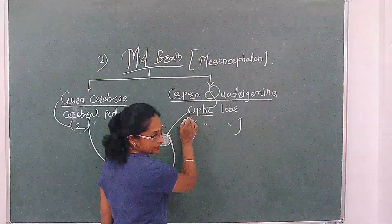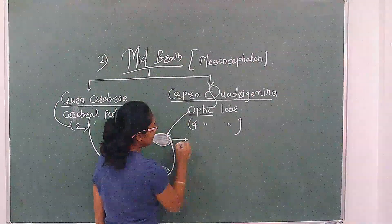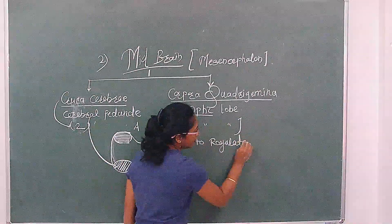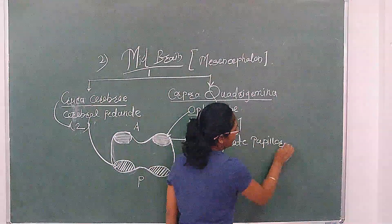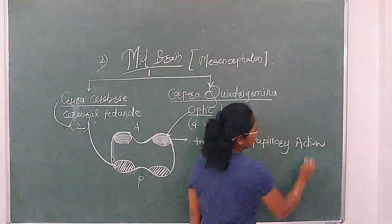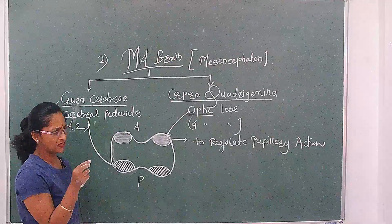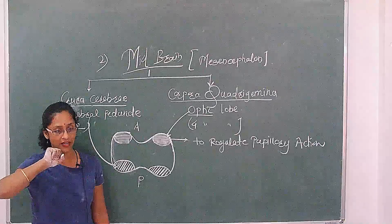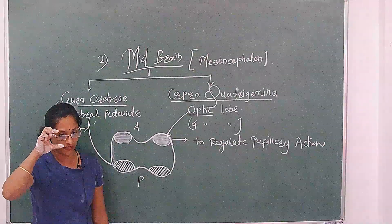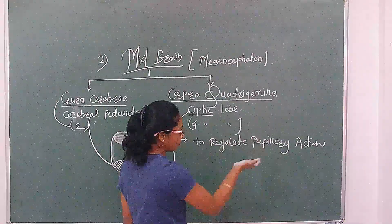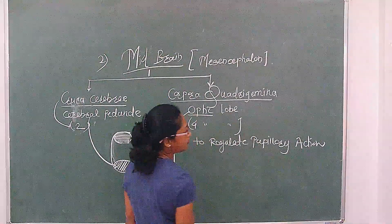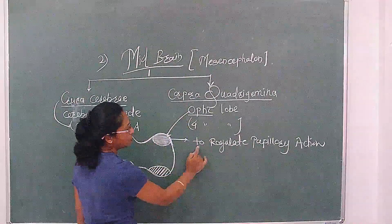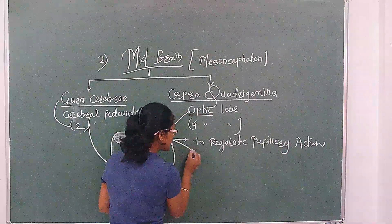The optic lobes regulate pupillary action. The pupil is a part of the eye. When there is more light or less light in front, our eyes contract and relax accordingly. The size of the pupil increases or decreases — this is the control of optic lobes, to regulate pupillary action.